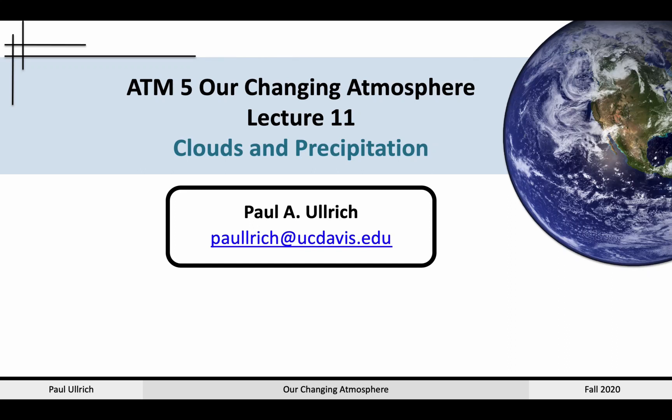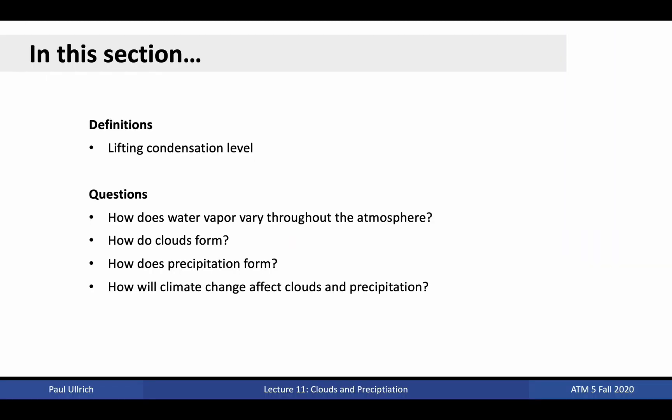Hello all, welcome back to ATM5, Our Changing Atmosphere. In today's lecture, we're continuing to talk about water in the atmosphere. Specifically, we'll be applying the concepts from last time to understand the formation of clouds and precipitation. We'll be defining lifting condensation level, and answering these questions: How does water vapor vary throughout the atmosphere? How do clouds form? How does precipitation form? And how will climate change impact clouds and precipitation?